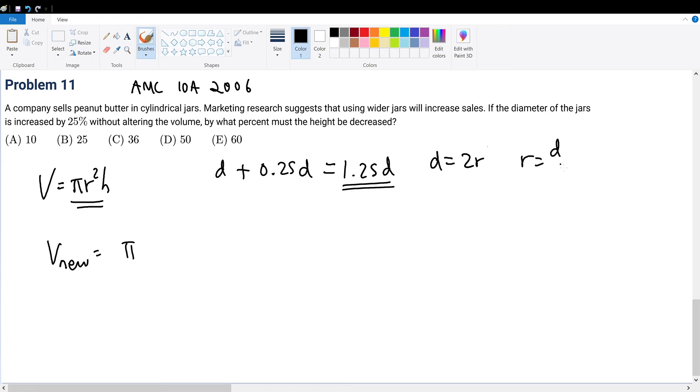The original volume is π(d/2)²h, which simplifies to πd²h/4.